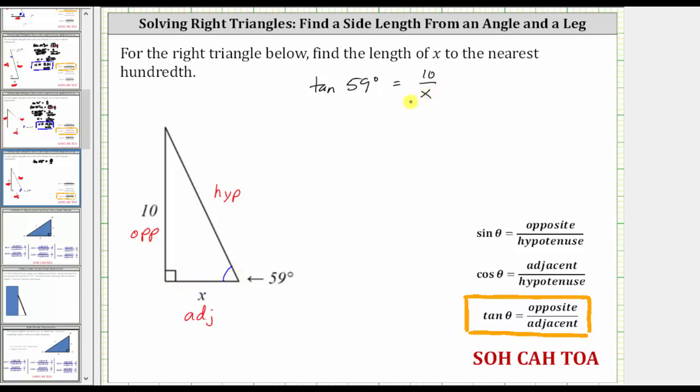Let's first clear the fraction by multiplying both sides by the denominator of x. This gives us tangent 59 degrees times x equals 10 divided by x times x. On the left, tangent 59 degrees times x equals x tangent 59 degrees.